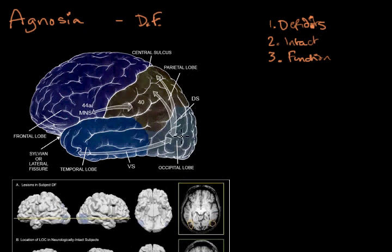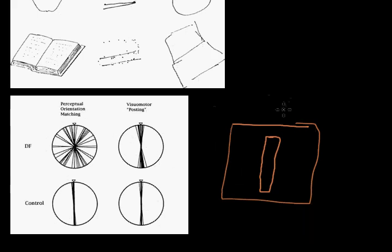We'll see this DS here is the dorsal stream that runs upward. And then we have the VS here, which is the ventral stream. And we'll talk about these in a second. So what happened when she was asked to do this?